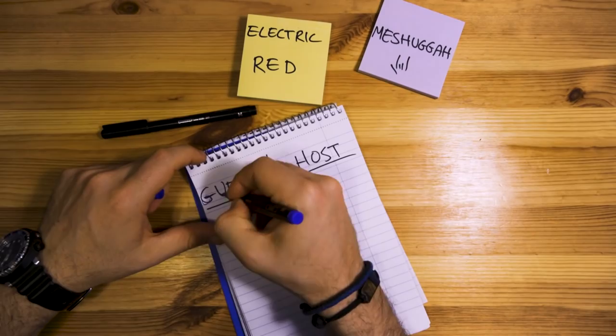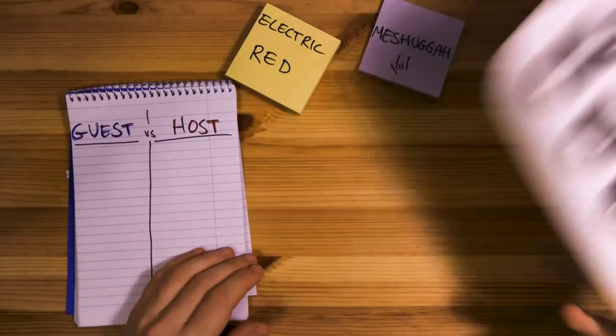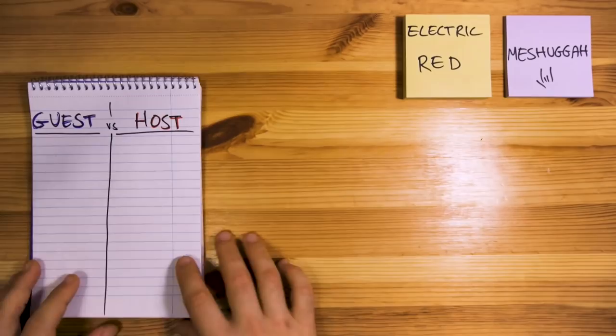For each riff in this song, I'll show you the distribution of instruments in our guest vs host table, and we'll have our beloved Meshuggah calculator with all the numbers for you guys to watch. Yalla, we have 6 riffs, so buckle up kids, let's go!